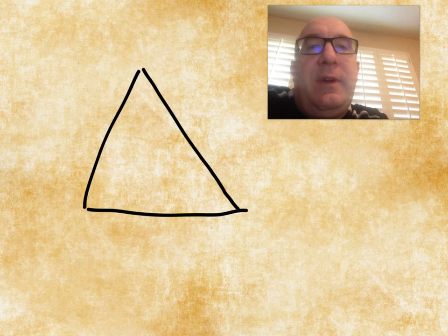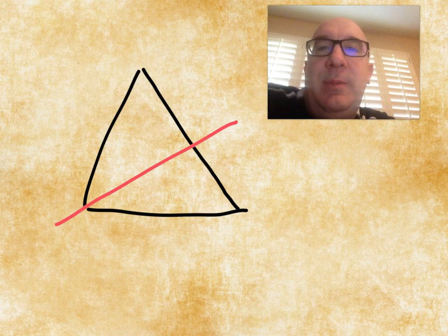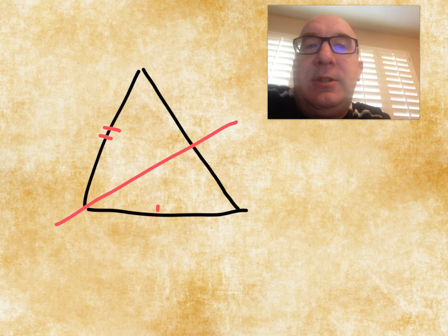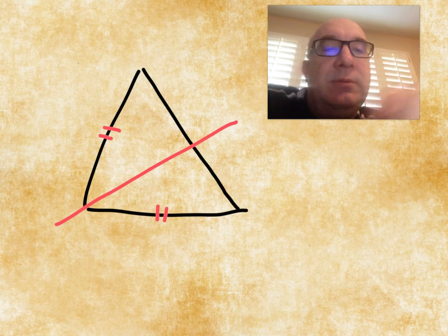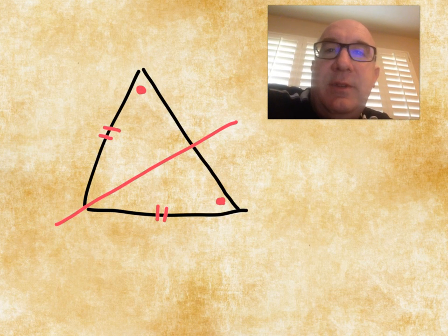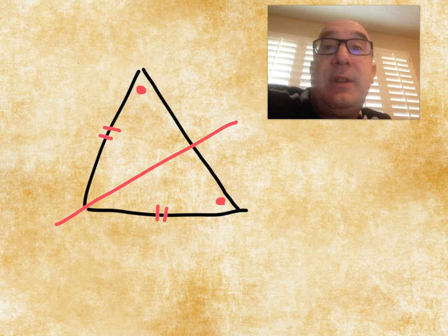So if we had, say, the first line of symmetry be this one here, it would guarantee that these two sides would have to be equal and that these two angles would also have to be equal because of the line of reflection. So that's one.